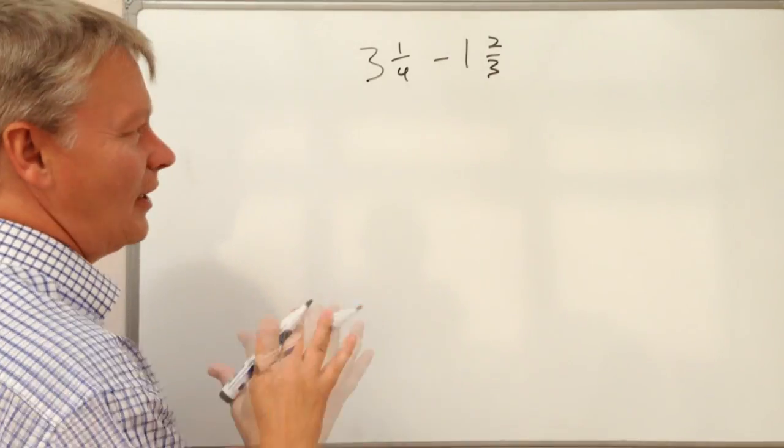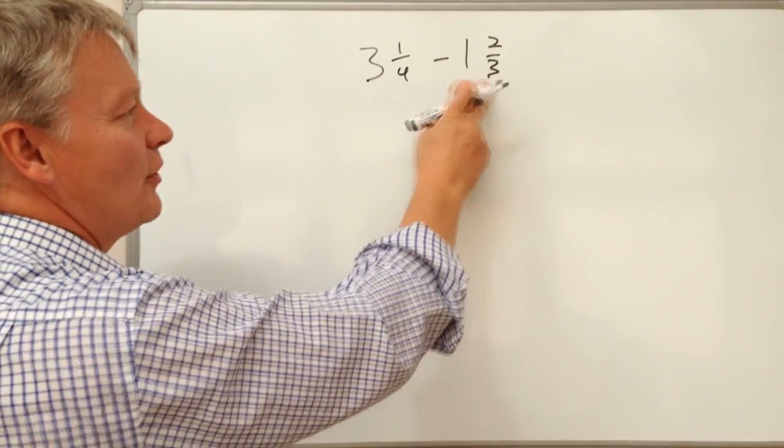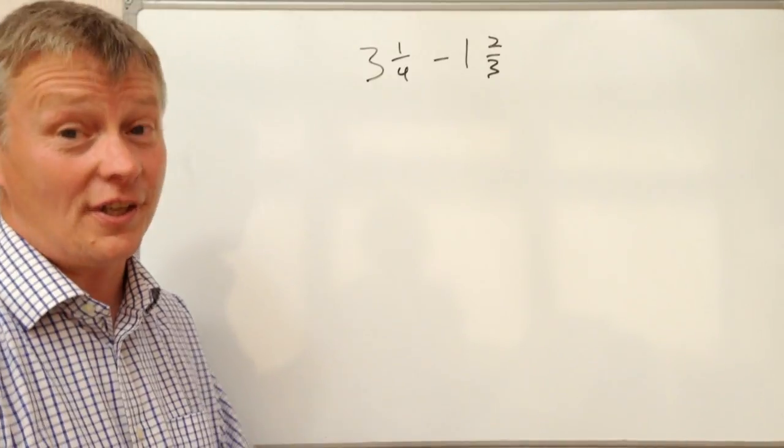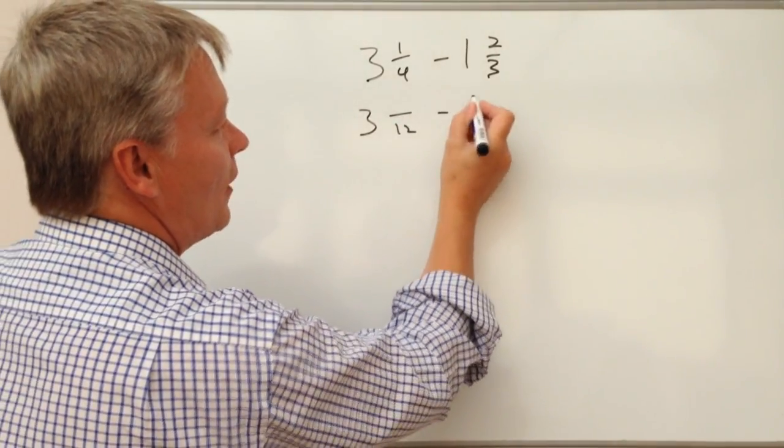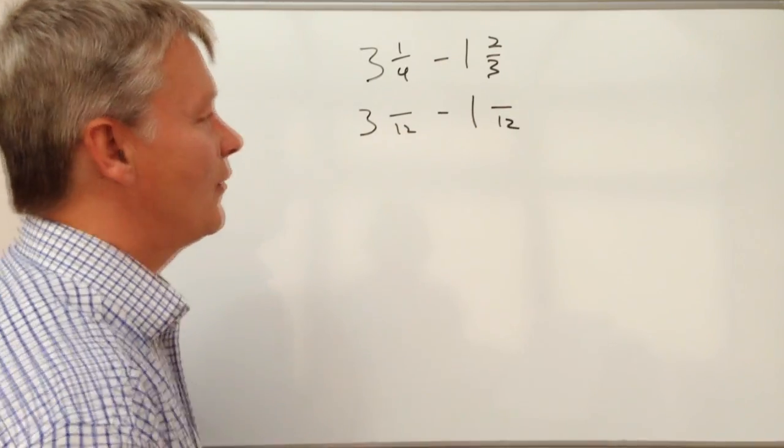From what I've said before, that's kind of OK, because we're going to make sure the denominators are the same. So let's just have a look at that. So that's going to be 3 and something over 12 minus 1 and something over 12.